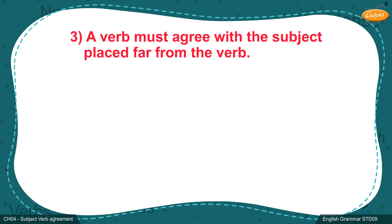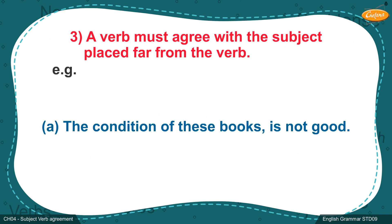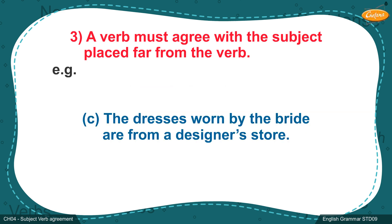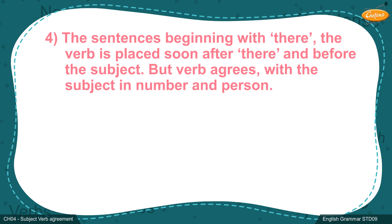Rule 3: A verb must agree with the subject even when it is placed far from the verb. Example A: 'The condition of these books is not good.' The subject is 'condition' and the verb 'is' agrees with it. Example B: 'The boy who is wearing blue pants is my cousin.' The subject 'boy' agrees with the verb 'is'. Example C: 'The dresses worn by the bride are from a designer's store.' The subject 'dresses' agrees with the verb 'are'.